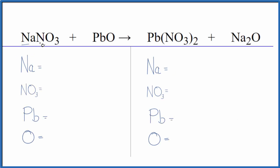In this equation we have NaNO3 plus PbO - this is sodium nitrate and this is lead oxide. To balance the equation, let's count the atoms up on each side. We have one sodium atom.